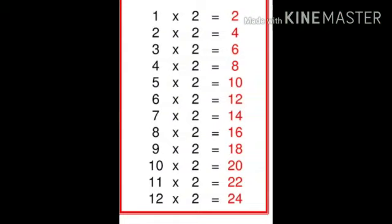One twos are two. Two twos are four. Three twos are six. Four twos are eight. Five twos are ten.